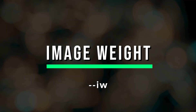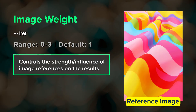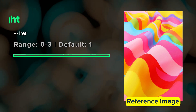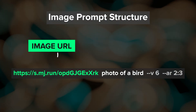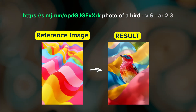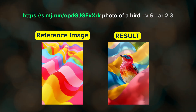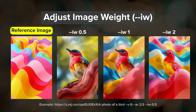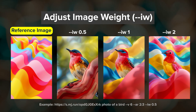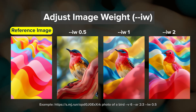Image weight, or --iw, can only be used with image prompts. An image prompt is when you have one or more images placed at the beginning of your prompt, followed by your prompt text. The images can be used to influence composition, subject matter, style, and colors. Image weight controls how much influence those images have on your results. The default value is 1, and in Midjourney v6, it takes decimal values between 0 and 3.